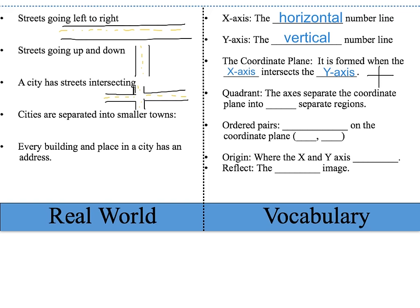The next vocabulary word is quadrant. The axes separate the coordinate plane into four separate regions. In the real world, every building and place in a city has an address. In our math city, we have ordered pairs — the location on the coordinate plane, written in the format x, y. The origin is where the x and y-axis intersect, and its ordered pair is (0, 0). Finally, reflect means the mirror image.